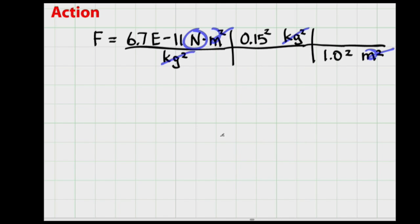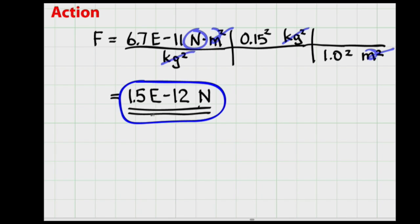And my answer comes out in newtons as I expect. Excellent. Let me do my calculations. So the gravitational force between a banana and an apple is about 1.5 times 10 to the minus 12 newtons, a minuscule tiny force.